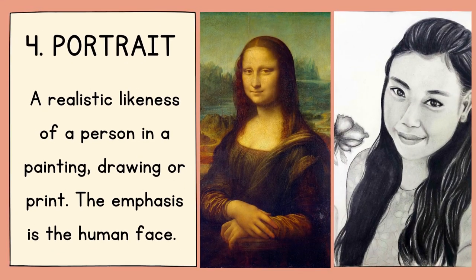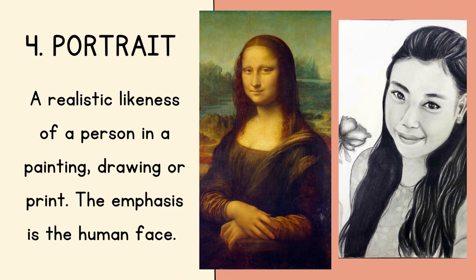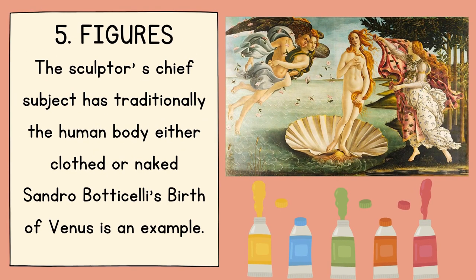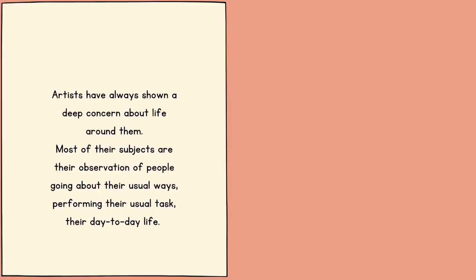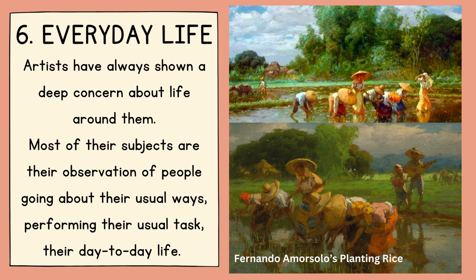The fourth is the portrait — a realistic likeness of a person in a painting, drawing, or print. The emphasis is on the human face, with the artist highlighting the main features and de-emphasizing others. The Mona Lisa by Leonardo da Vinci is a famous example of a portrait. The fifth is figures — the sculptor's chief subject has traditionally been the human body, either clothed or naked. Sandro Botticelli's Birth of Venus is an example.